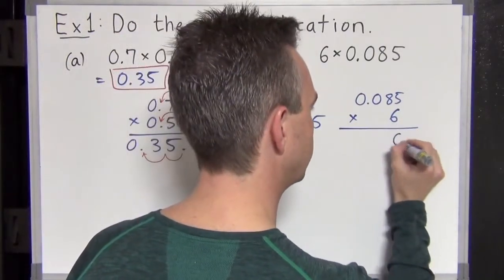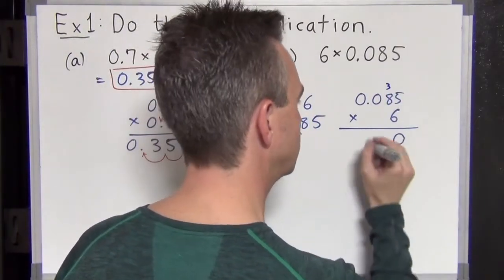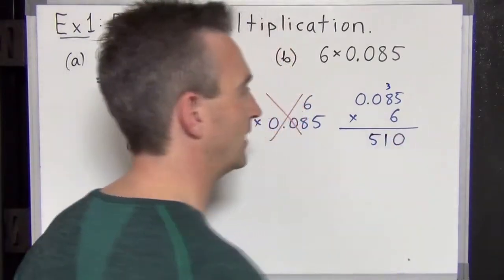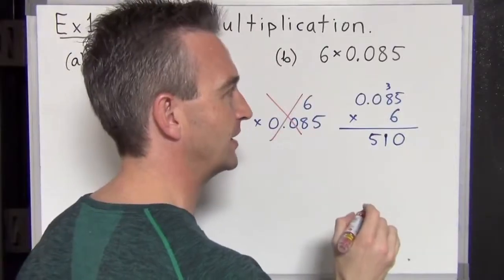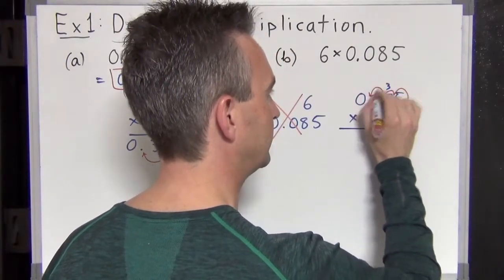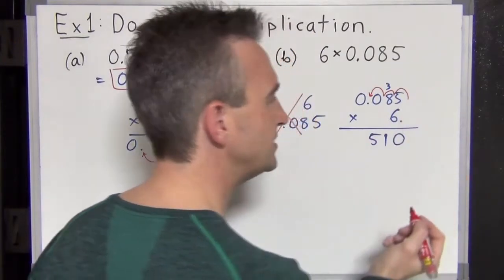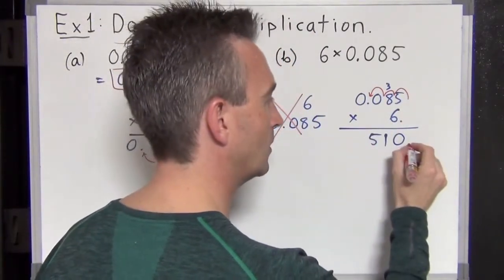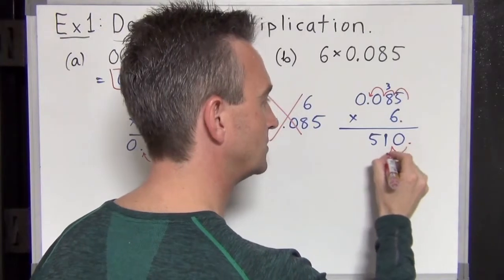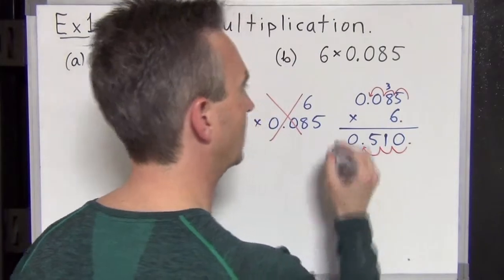Six fives are 30. Write down the zero, carry the three. Six eights are 48 plus three is 51. 510? No. Don't forget the decimal point. Make sure it goes in the right place. That's right. So how many decimal places on the top number? One, two, three. How many decimal places on the bottom number? Zero. So this is going to be three decimal places. The decimal starts here. One, two, three. So the answer is 0.51.